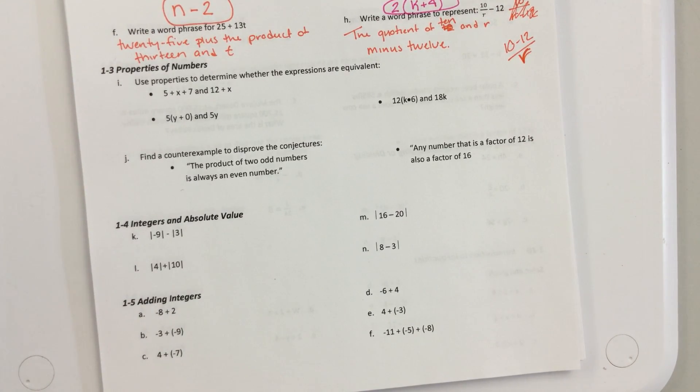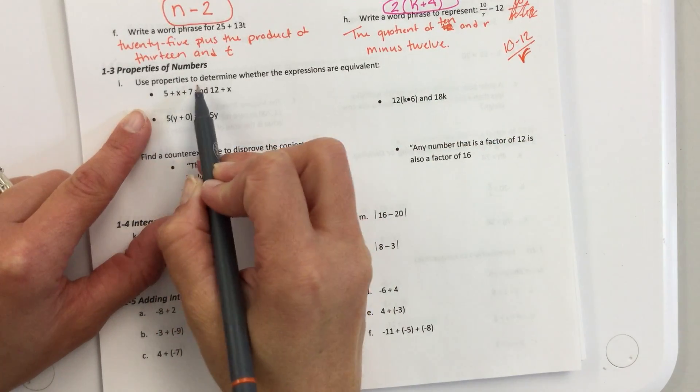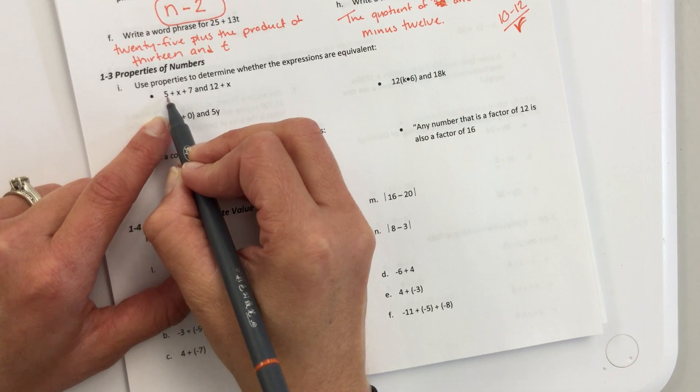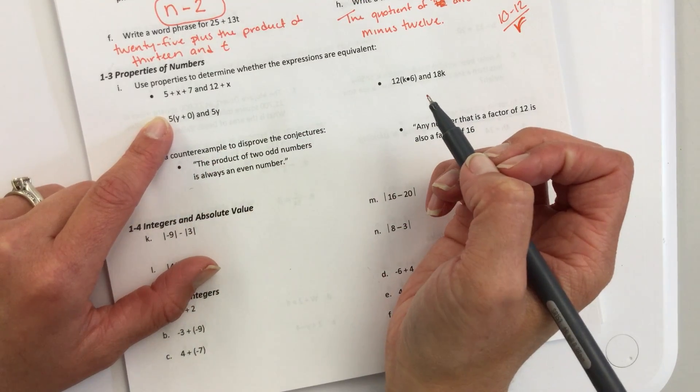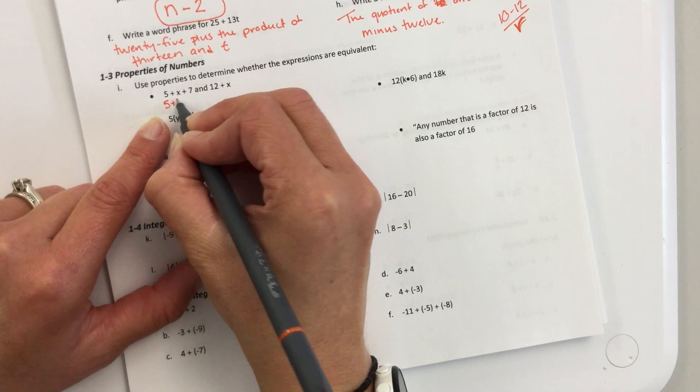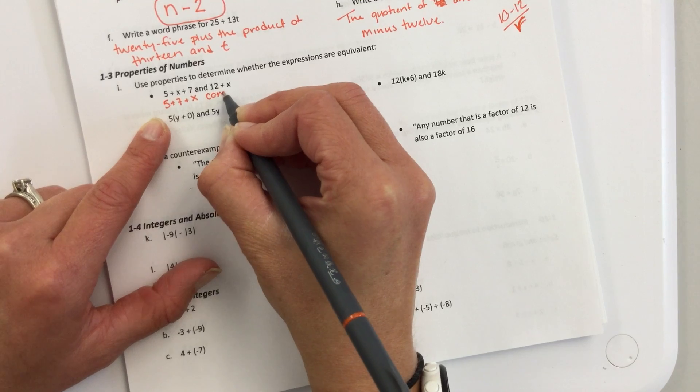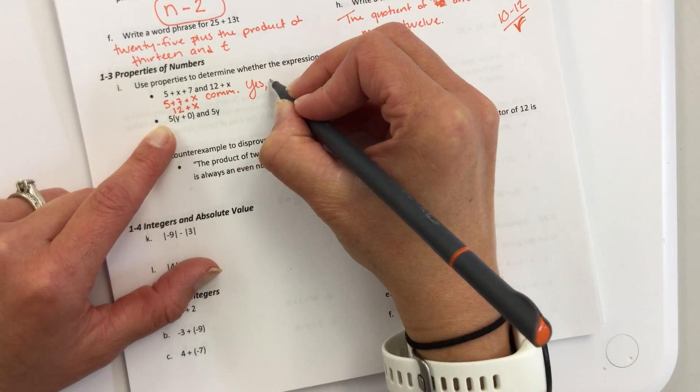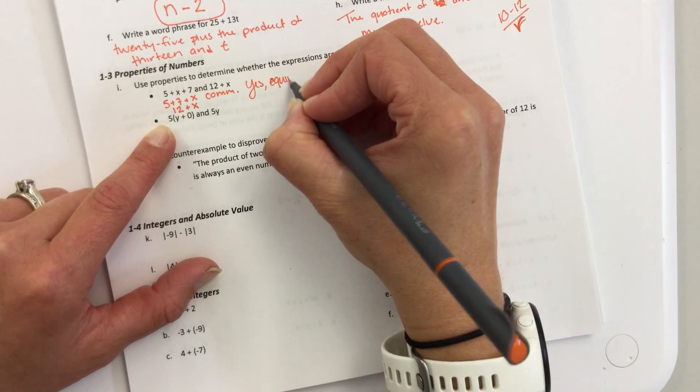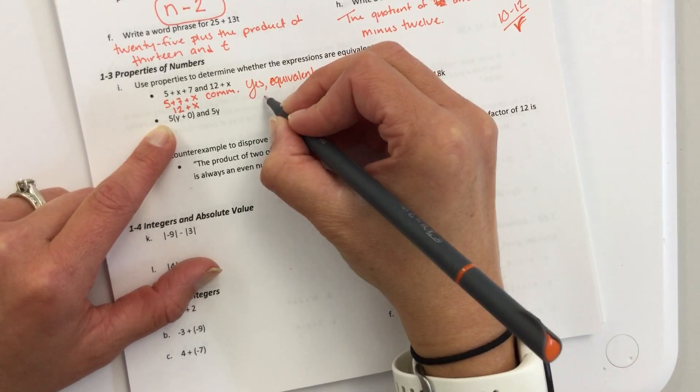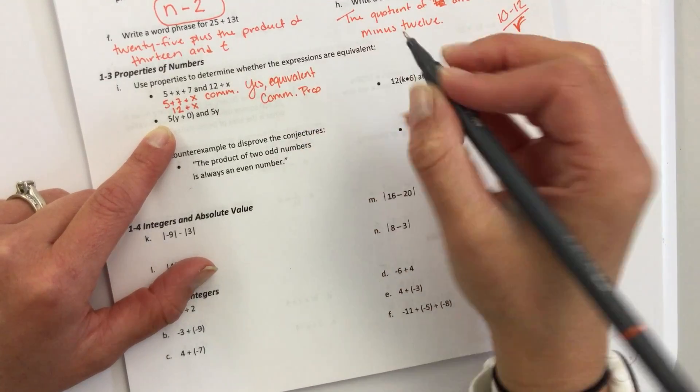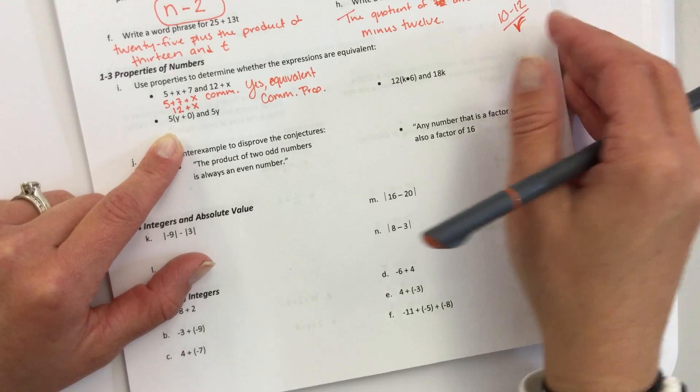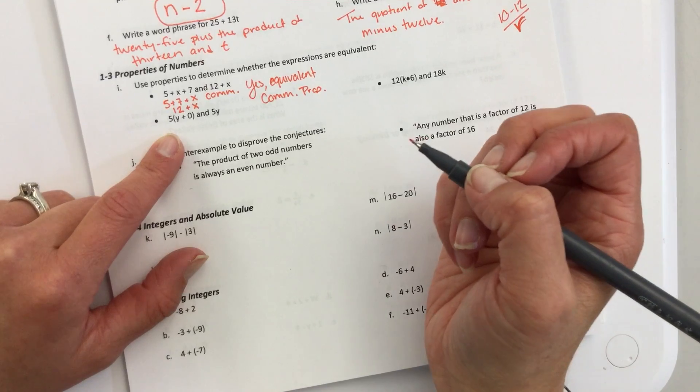So, the next section, we talked about the different properties. This always seems to kind of confuse us, but it says use properties to determine whether expressions are equivalent. So, for example, we know how to simplify this. So, if I took 5 plus X plus 7, does it give me 12 plus X? Yes. Yeah, because I know that I can change the order of things here. So, I just use the commutative property. I can take 5 plus 7, that gives me 12. So, yes, they are equal. And then, I would say it's the commutative property. So, on your guys' quiz, there was a lot of you that didn't tell me yes or no if it was equivalent or not.